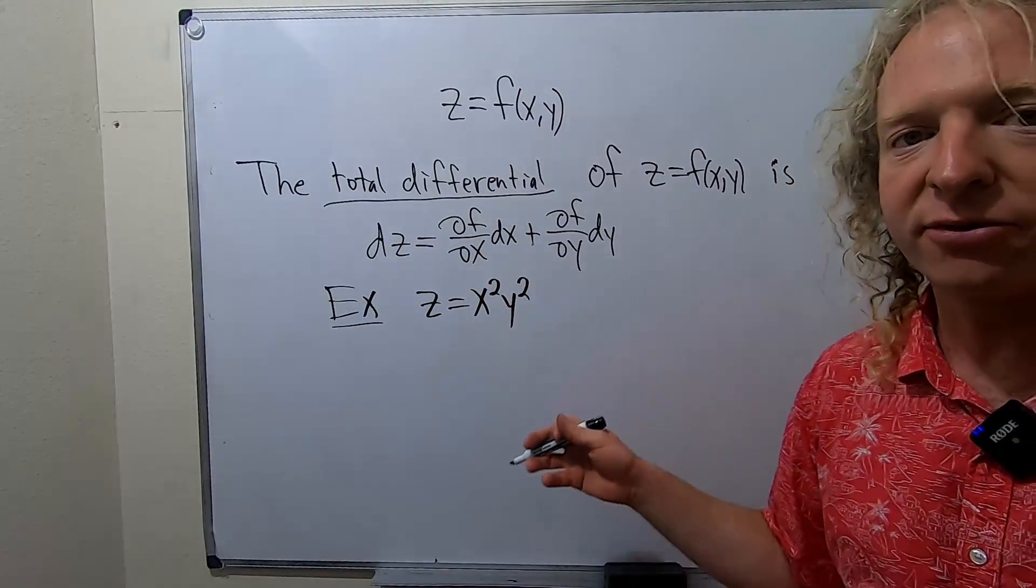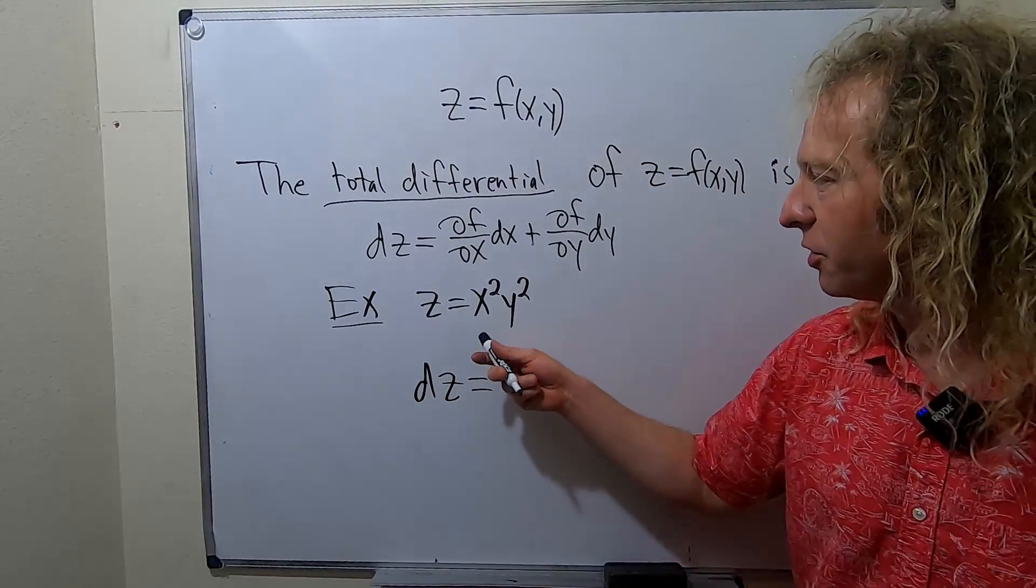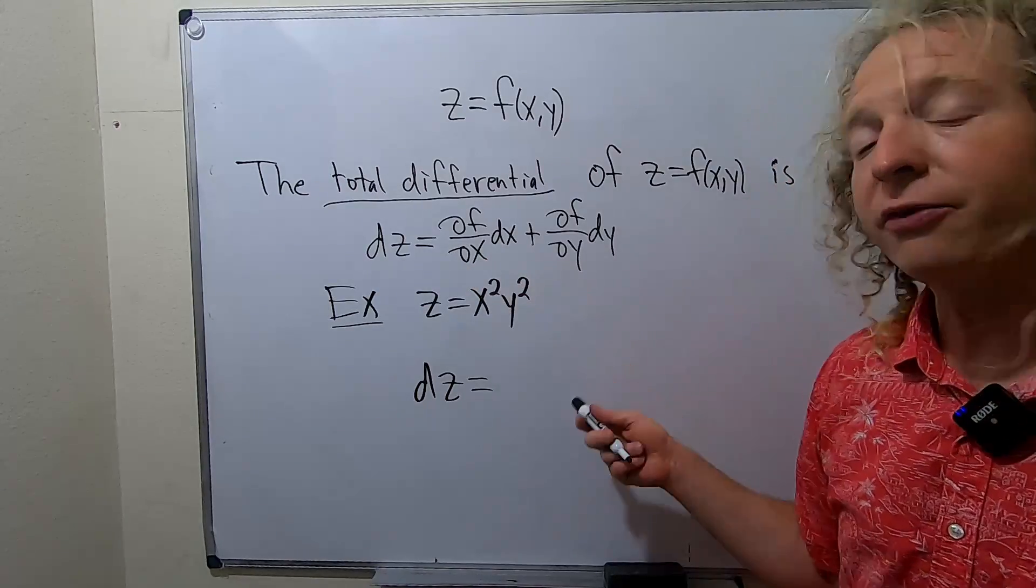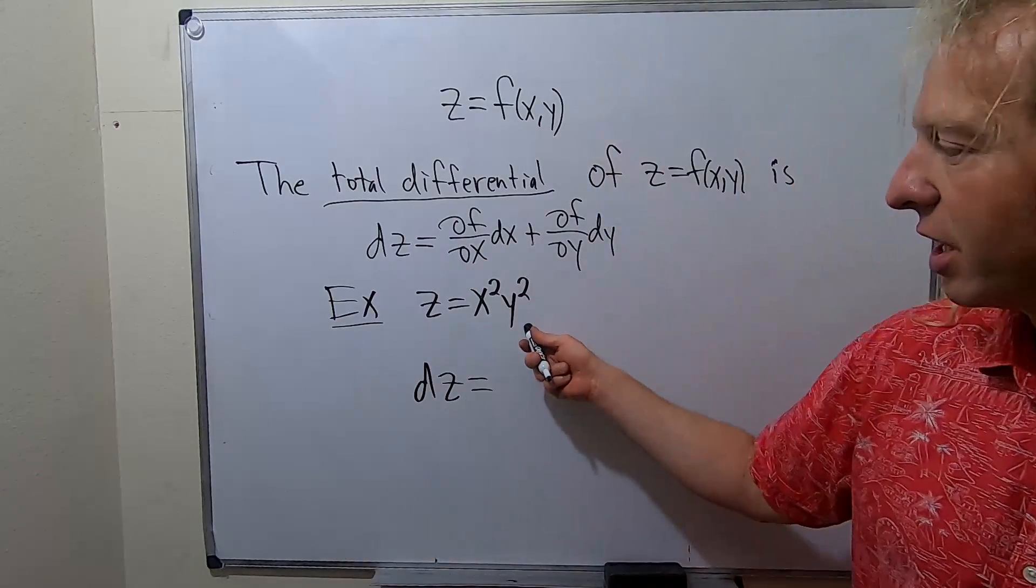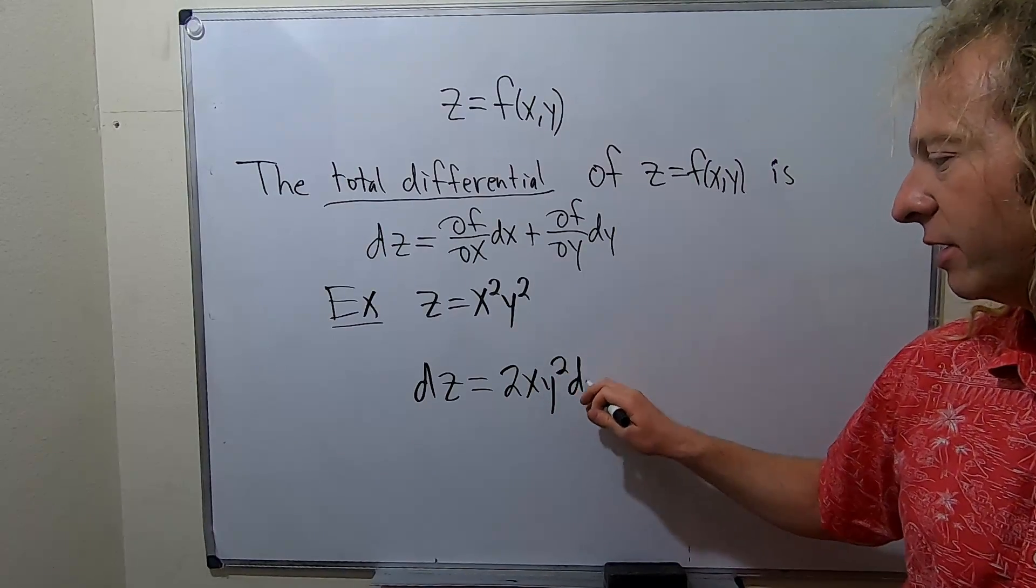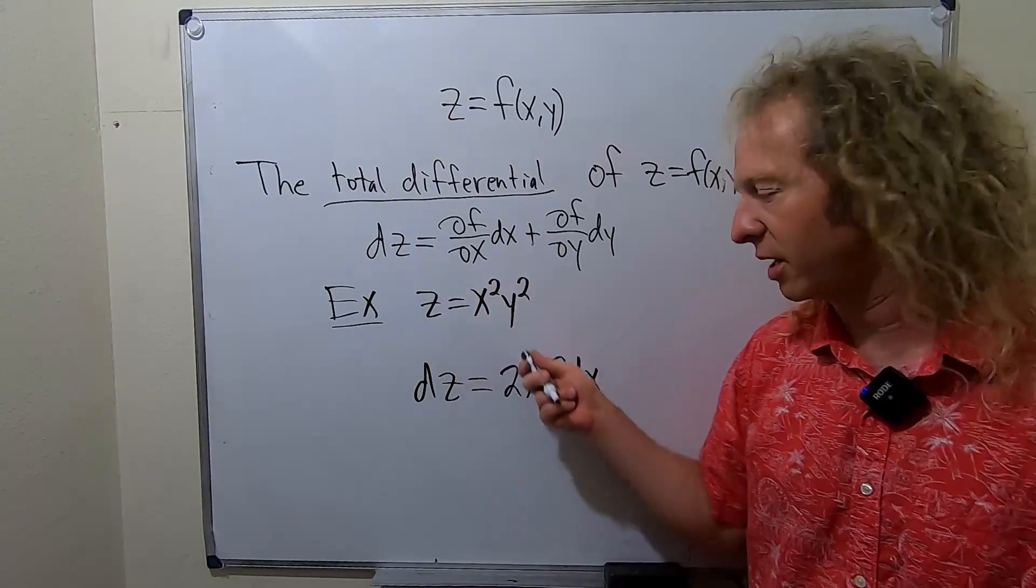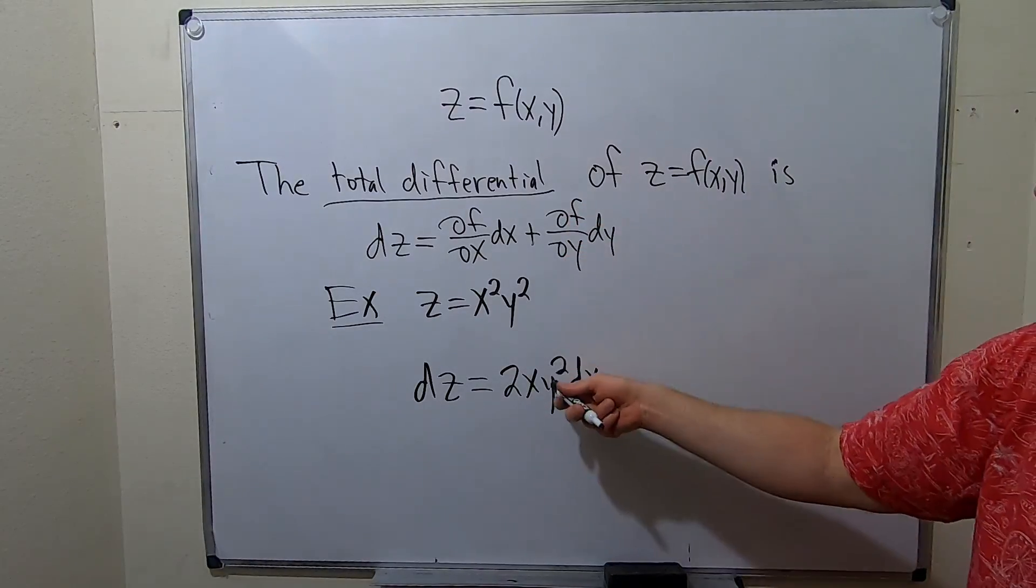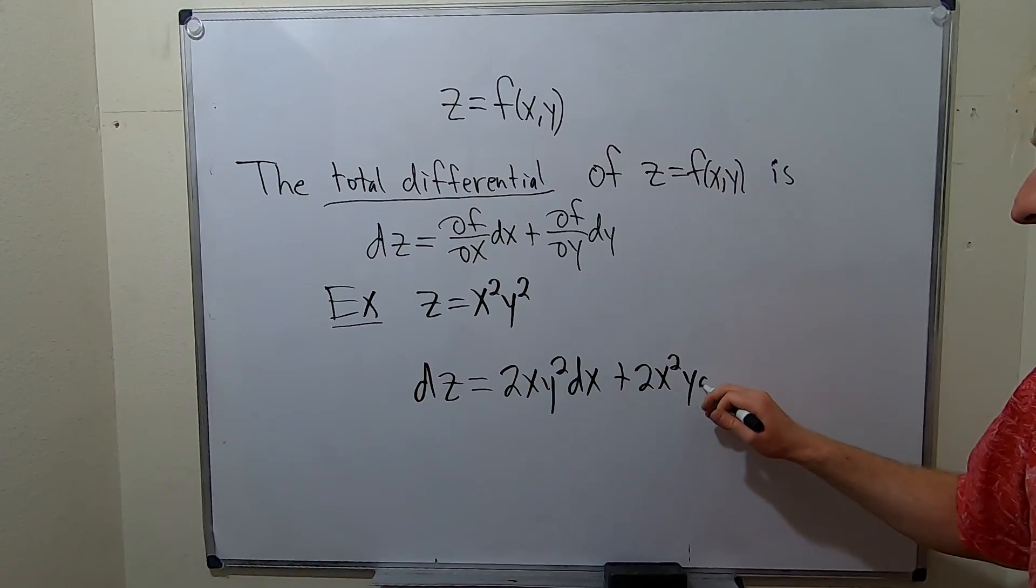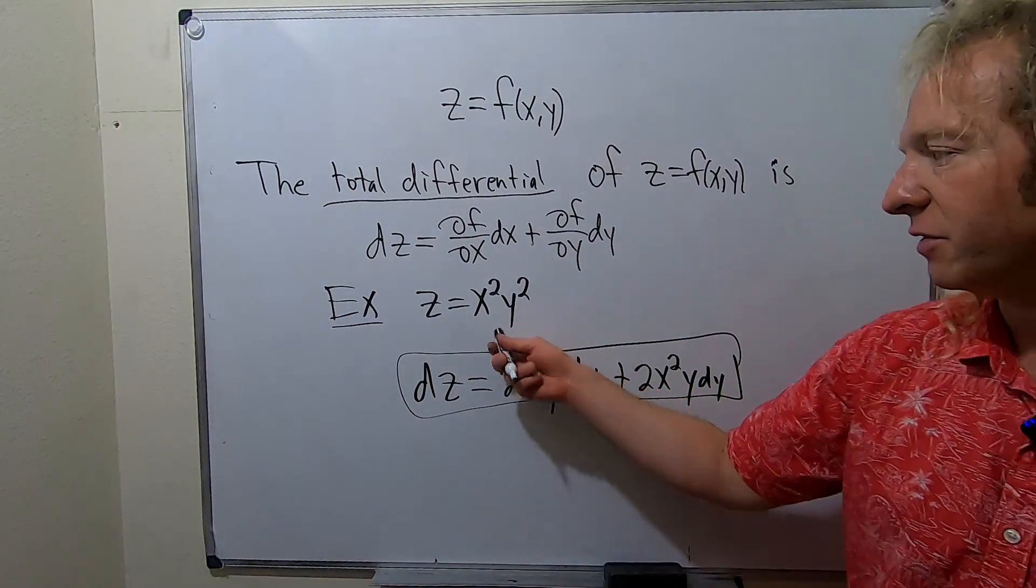Let's find the total differential of this function. dz equals - well, first it's del f del x. When you take the partial with respect to x, all of your y's are constants, so this just hangs out. You get 2x y squared, and don't forget the dx. Then del f del y - the x squared is a constant, so it would be 2x squared y dy. This would be the total differential of this function.